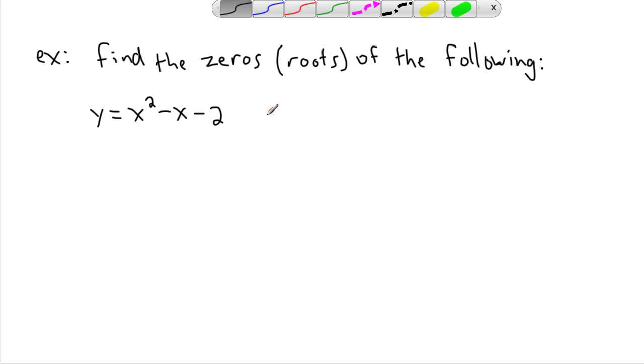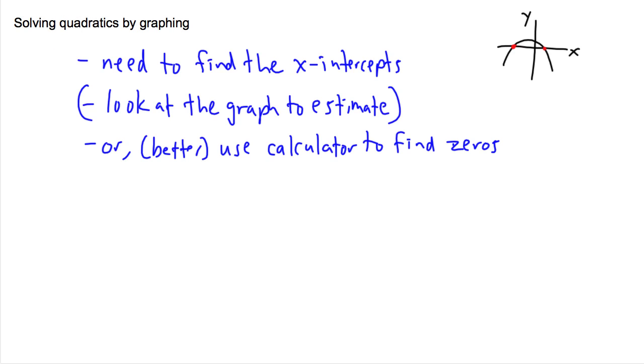What I can do is try to sketch the graph. Now I know it opens upwards, but I don't know much else about it. I can figure out where the vertex is by looking at the axis of symmetry, but I'm just going to try to do this with a calculator because that's the point here. We're going to be solving by graphing.